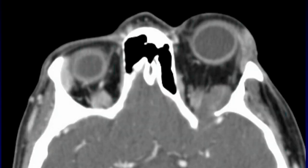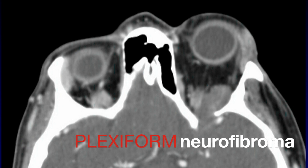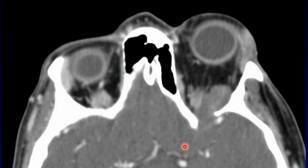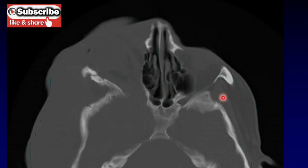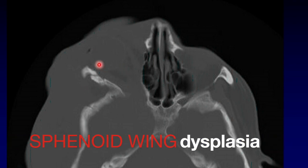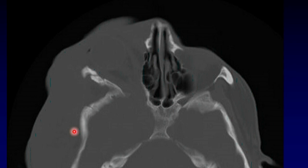Plexiform neurofibromas, classically in the setting of NF1, will affect the orbit. You can see them crawling along the expected course of the third cranial nerve, expanding the superior orbital fissure — classic for plexiform neurofibroma. Remember that in some cases of neurofibromatosis you get extensive dysplasia of the sphenoid bone as a result of these surrounding neurofibromas.